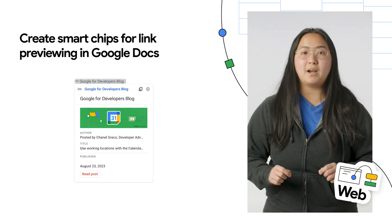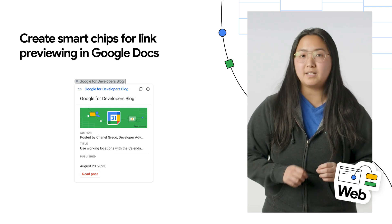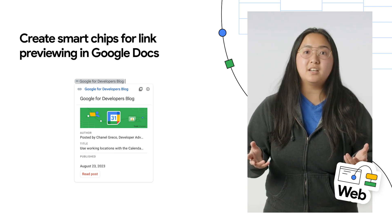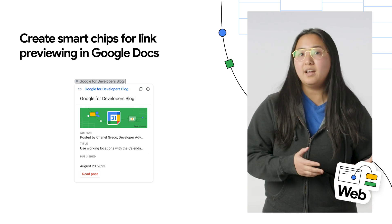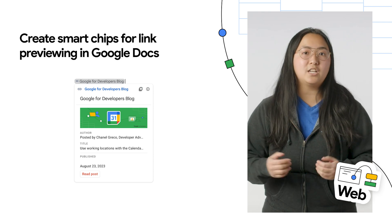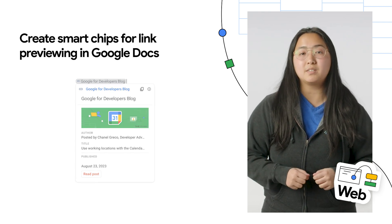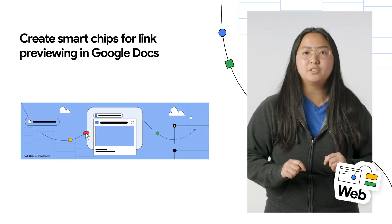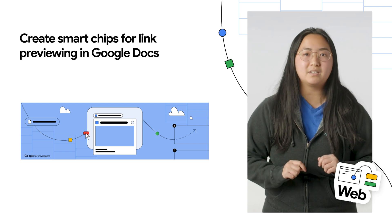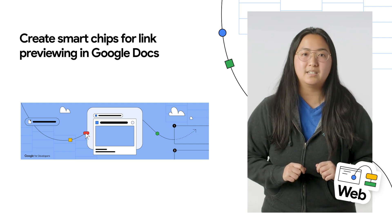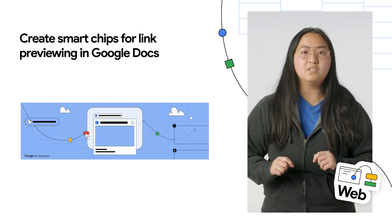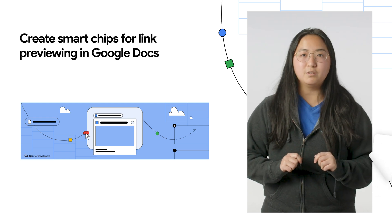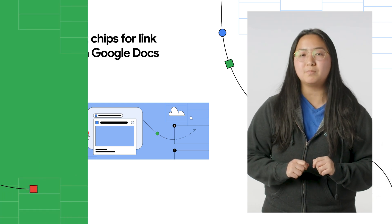Third-party smart chips are powered by Google Workspace add-ons and, as its name suggests, lets you add, view, and engage with information from third-party apps. And of course, smart chips can be published to the Google Workspace Marketplace. Click on over to the link in the description to learn more about how you can build your own smart chips.